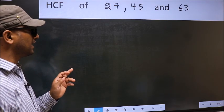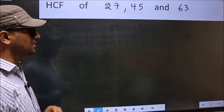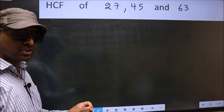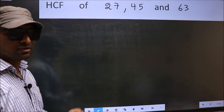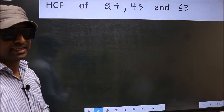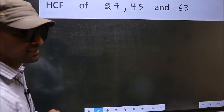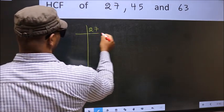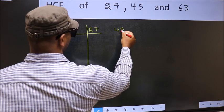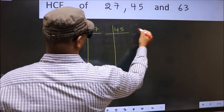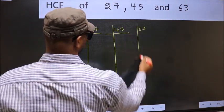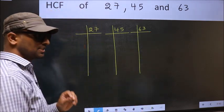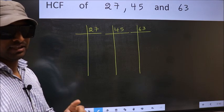HCF of 27, 45 and 63. To find the HCF, we should do the prime factorization of each number separately. What I mean is 27, 45, 63. This is your step 1. Next,